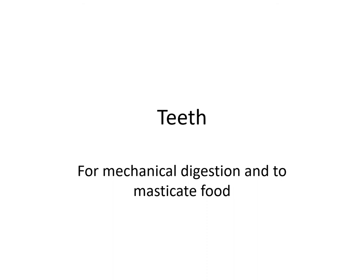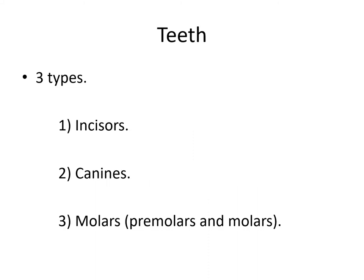The teeth function for mechanical digestion and for chewing or masticating food. You have three types of teeth: incisors, canines, as well as molars, which can be premolars or molars. The deciduous teeth are the primary baby teeth that fall out — they include 20 teeth: four incisors, two canines, and four molars in each jaw.